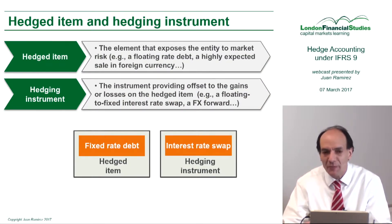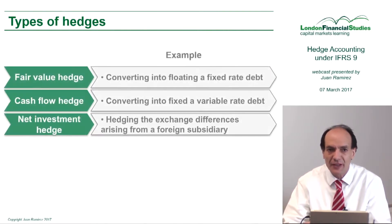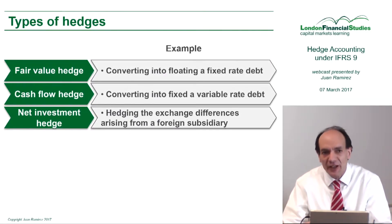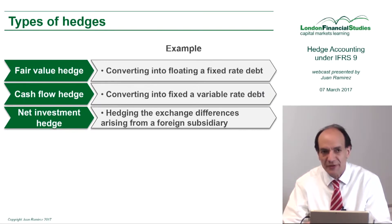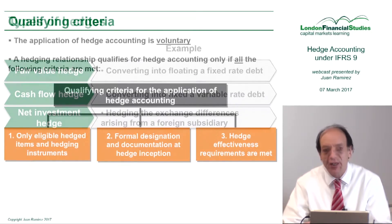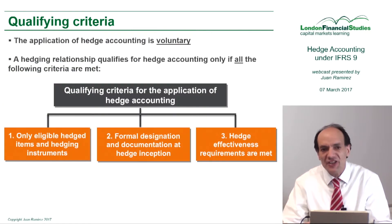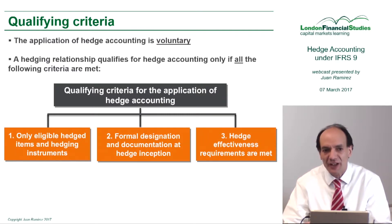An interest rate swap will be the hedging instrument. Regarding the types of hedges, there are three types of hedge accounting relationships. The first one is called a fair value hedge. Only eligible hedge items and hedging instruments can be part of a hedging relationship.